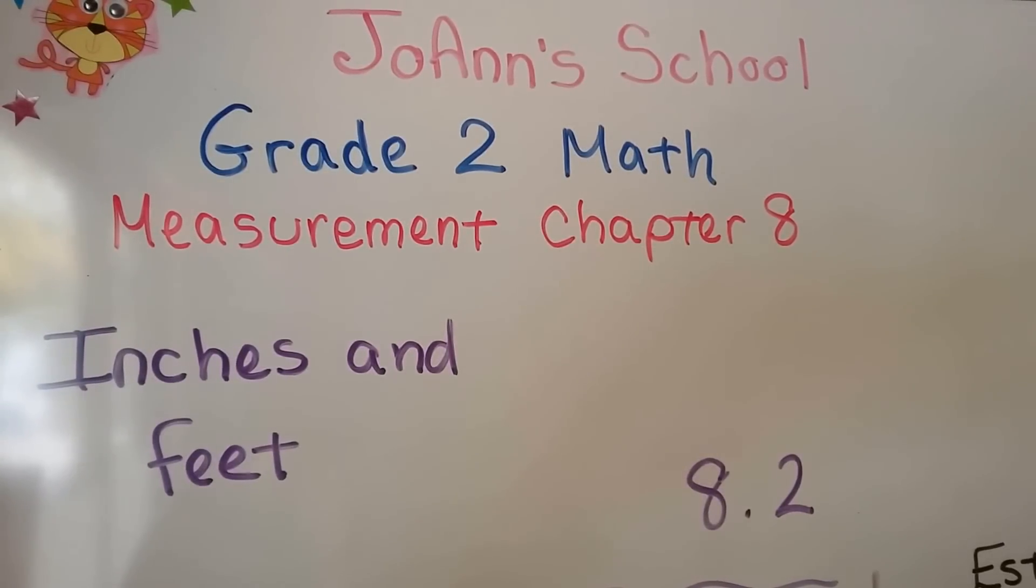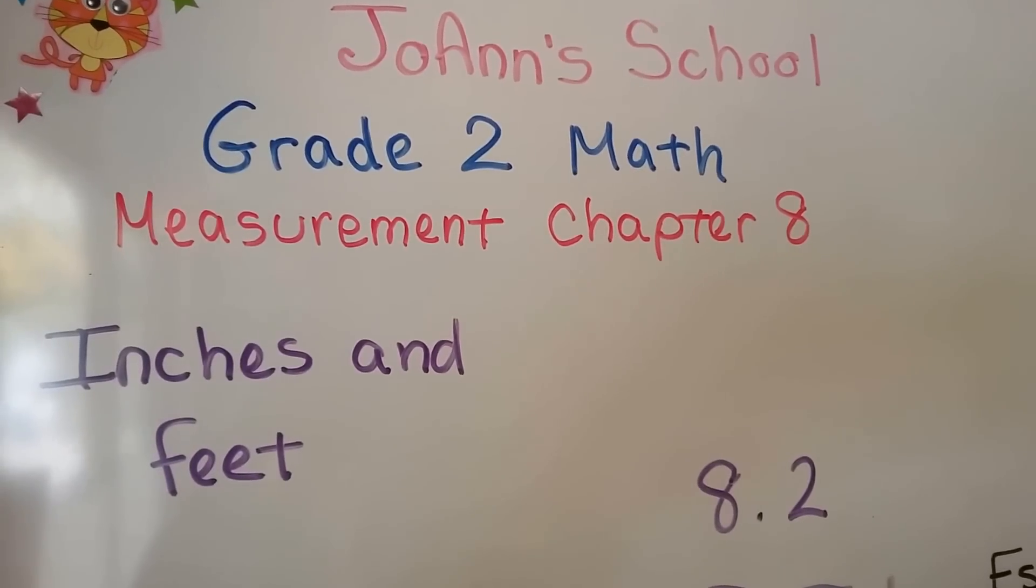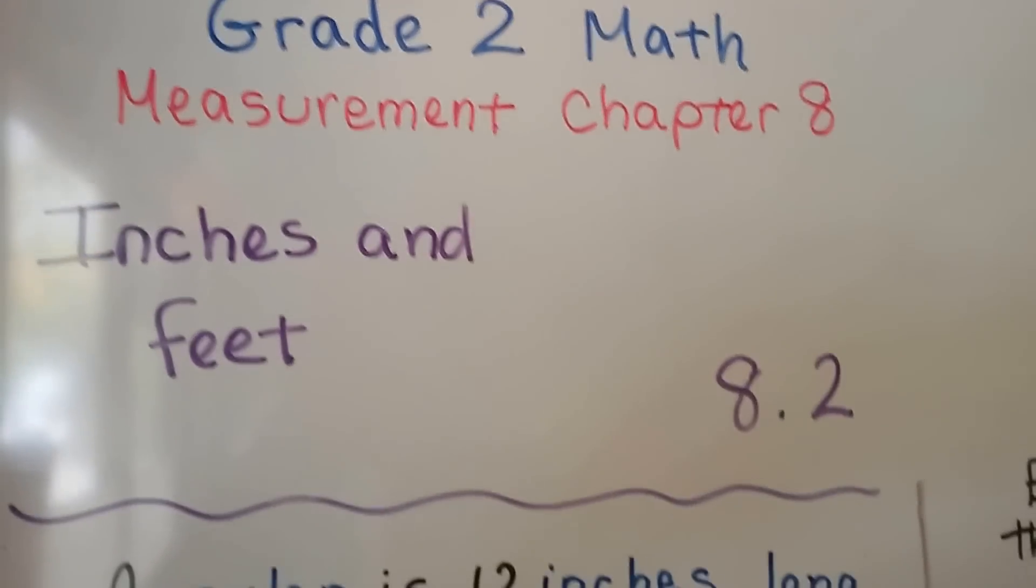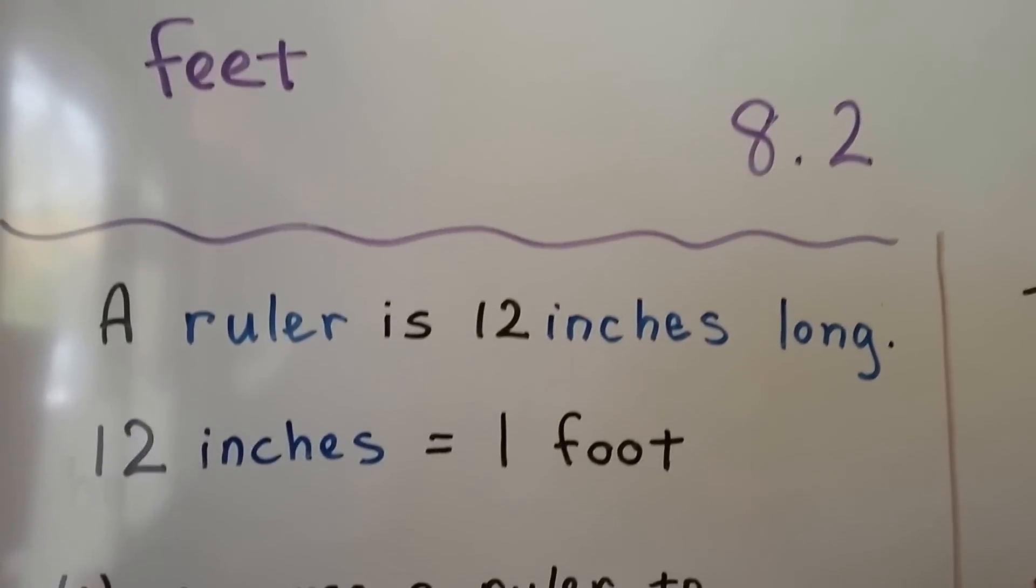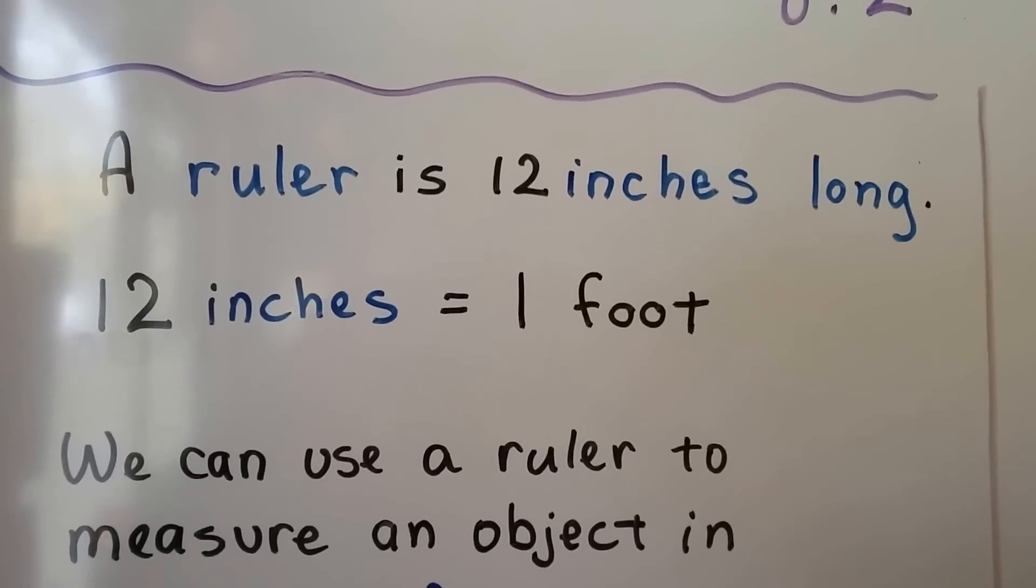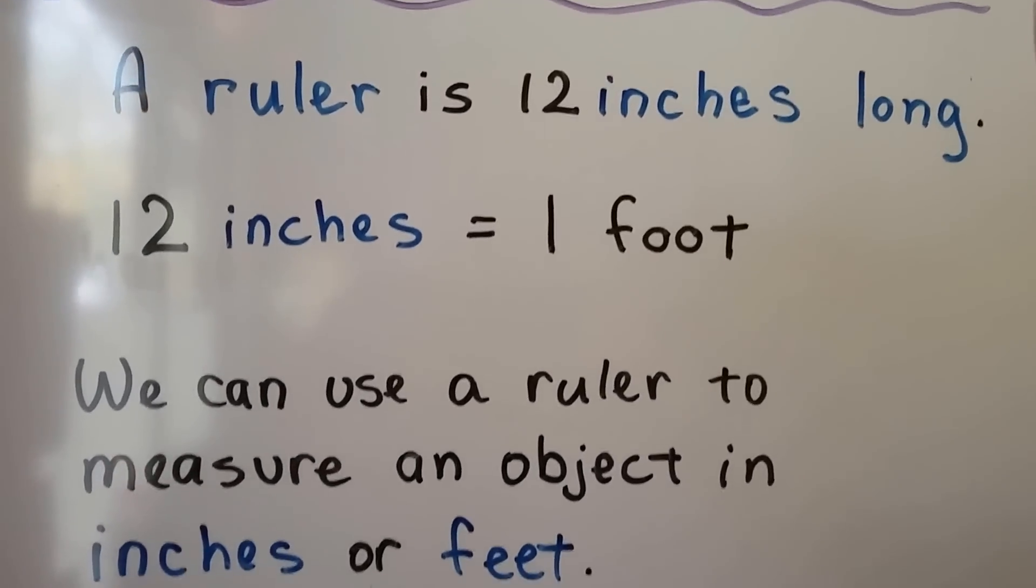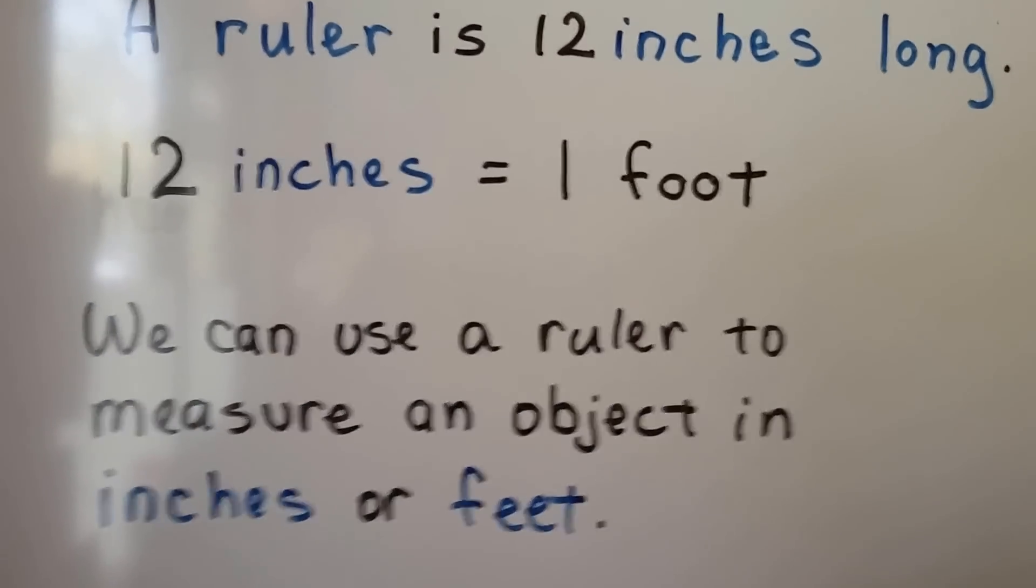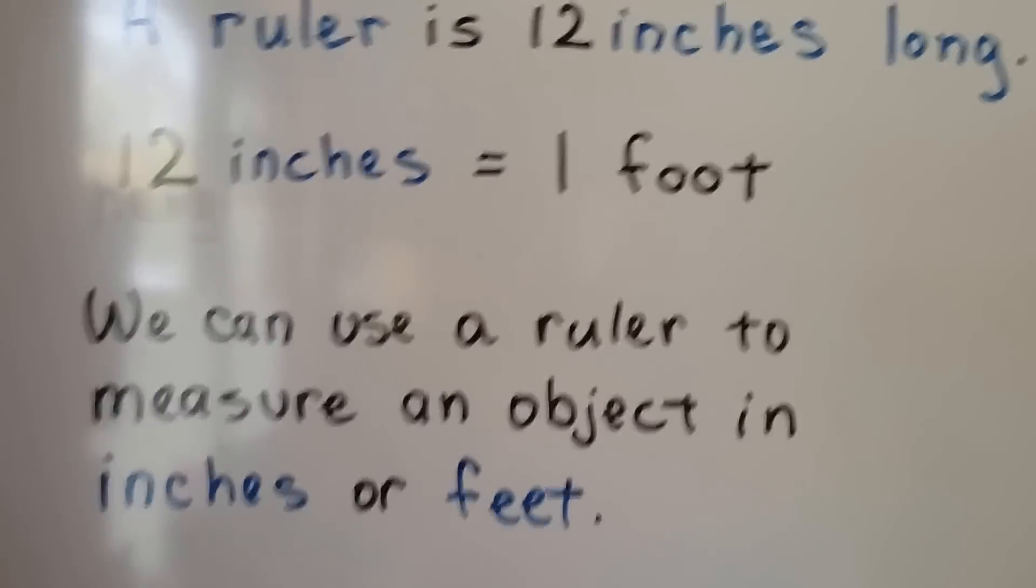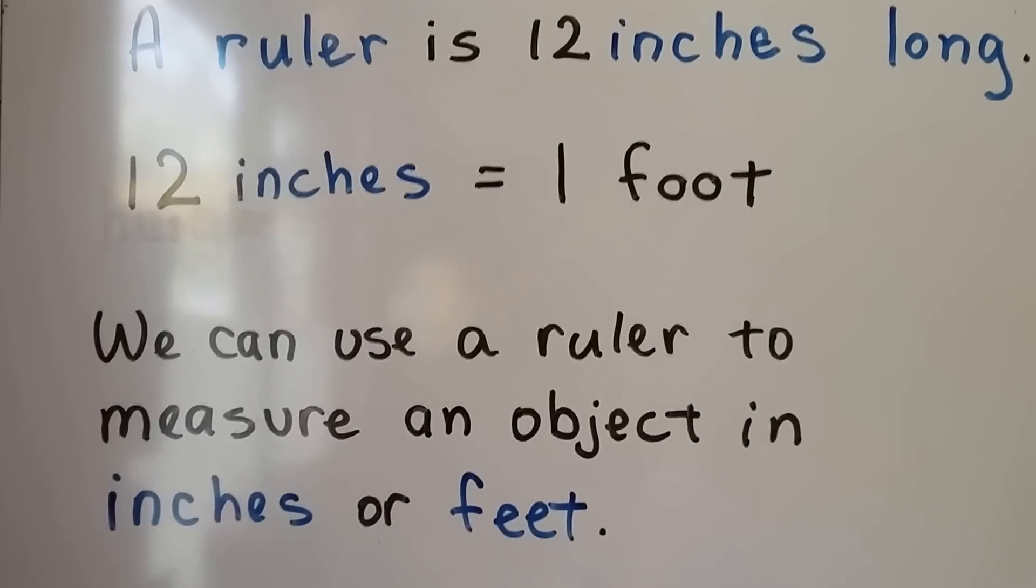We're going to talk about inches and feet in this video. This is 8.2. A ruler is 12 inches long and 12 inches equals 1 foot. We can use a ruler to measure an object in inches or feet.